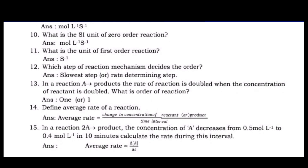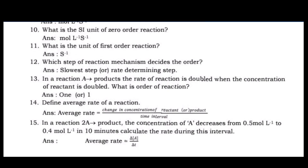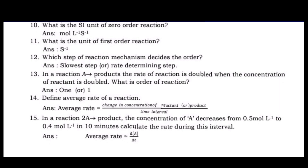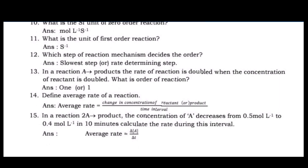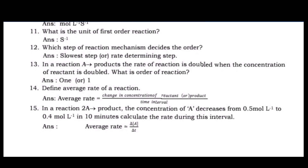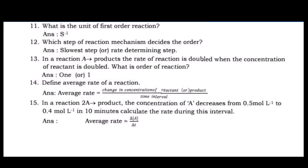Question 13: In a reaction A → products, the rate of reaction is doubled when the concentration of reactant is doubled. What is the order of reaction? Answer: 1 (first order).